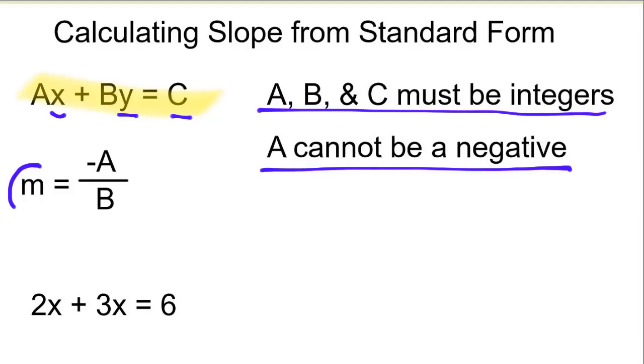Now remember, slope is using the letter m. So slope here, m, is negative A over B. So the opposite of what you see here divided by what you see here.